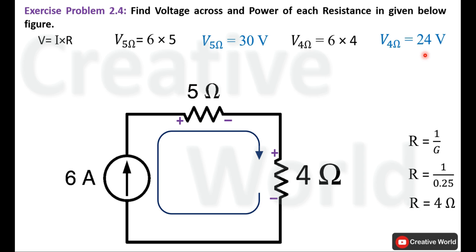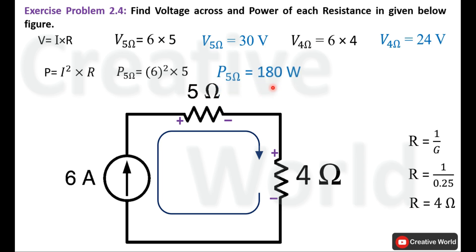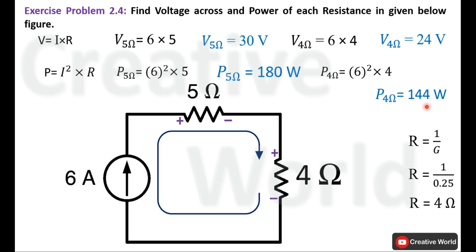We have calculated the voltage across both resistances. Now we calculate power dissipation using P equal to I square multiplied by R. Power of 5 ohm resistance: 6 squared multiplied by 5, giving 180 watt — this power is dissipated through the 5 ohm resistance. For the 4 ohm resistance, current is 6A entering from the positive terminal, multiplied by 4 ohm, giving 144 watt absorbed by the 4 ohm resistance.